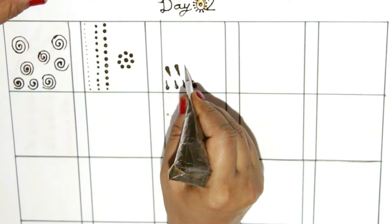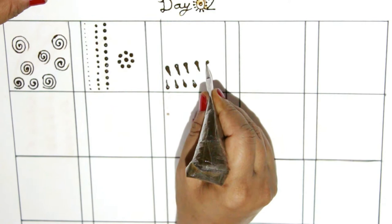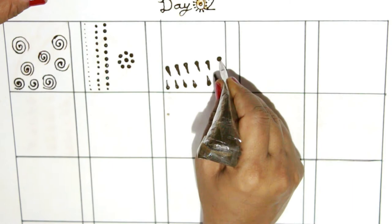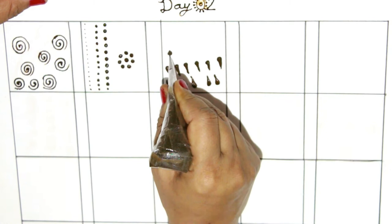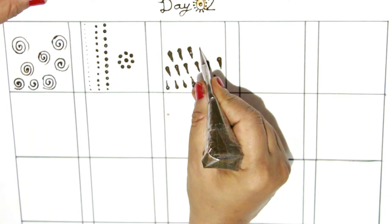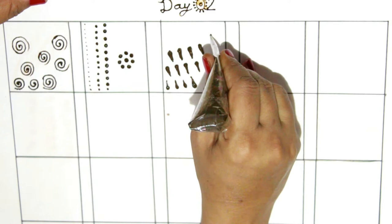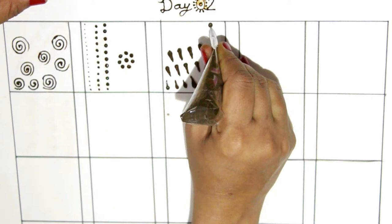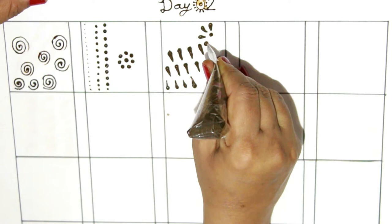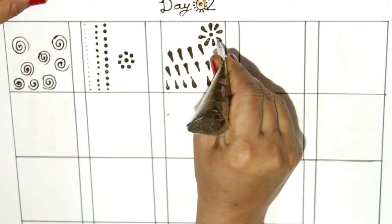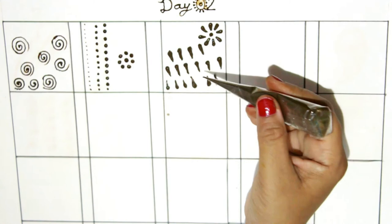You need to practice dots upward and downward. These drops are useful to make flower designs. Practicing the drops 3-4 times will lead to perfection.